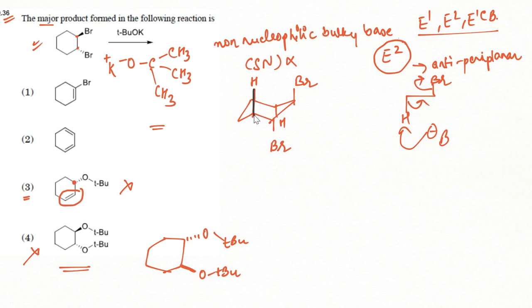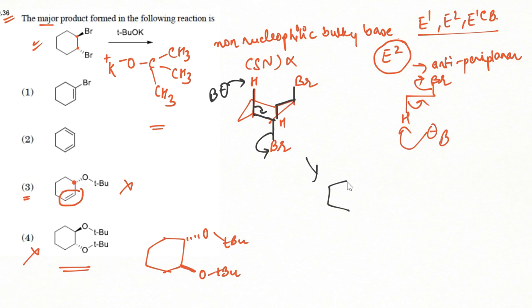One hydrogen is anti to this bromine, and the other hydrogen on the adjacent carbon is anti to the other Br. So elimination is possible on both sides. The bulky tertiary butoxide base takes up the proton, the bonds shift, and the same happens on the other side — giving us a diene molecule, cyclohexadiene. Two back-to-back elimination reactions have taken place, giving a double elimination product.